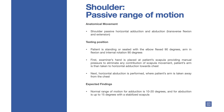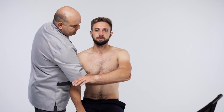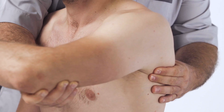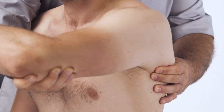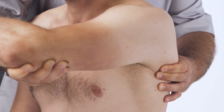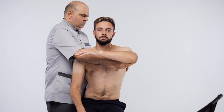First, the examiner's hand is placed at the patient's scapula providing manual pressure to eliminate any contribution of scapula movement. The patient's arm is then taken to horizontal adduction towards the chest. Next, horizontal abduction is performed, where the patient's arm is taken away from the chest.